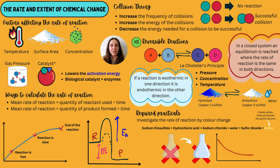We can calculate the rate of reaction with two equations: the mean rate of reaction equals the quantity of a reactant used divided by the time, or the quantity of a product formed divided by the time. We can also show this graphically — a curved line shows the reaction is very fast at the beginning and slows down gradually. For a catalyst and activation energy, on a reaction profile the activation energy would just be a smaller peak on that graph.